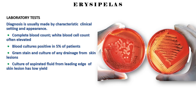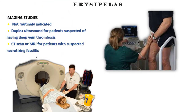Laboratory tests. Diagnosis is usually made by characteristic clinical setting and appearance. Complete blood count: white blood cell count often elevated. Blood cultures positive in 5% of patients. Gram stain and culture of any drainage from skin lesions. Culture of aspirated fluid from leading edge of skin lesion has low yield. Imaging studies not routinely indicated. Duplex ultrasound for patients suspected of having deep vein thrombosis. CT scan or MRI for patients with suspected necrotizing fasciitis.